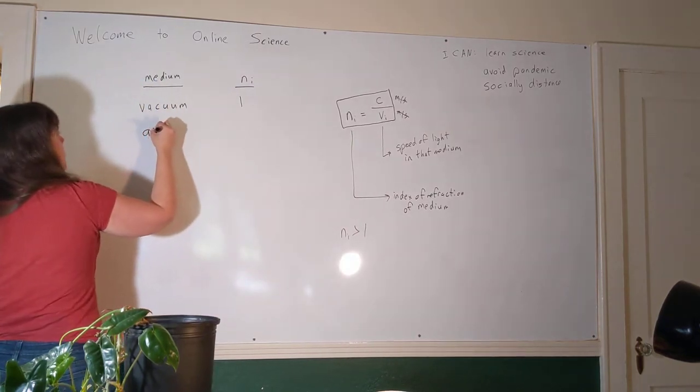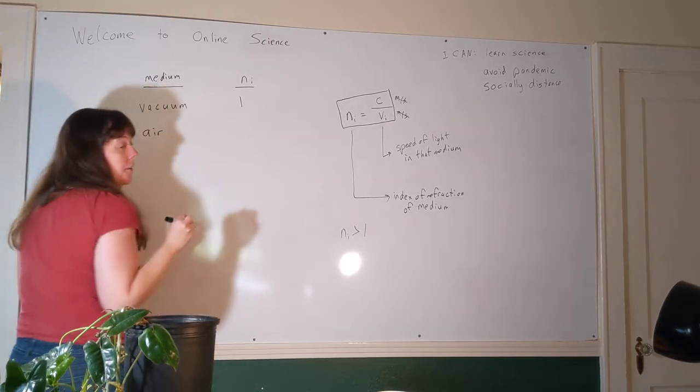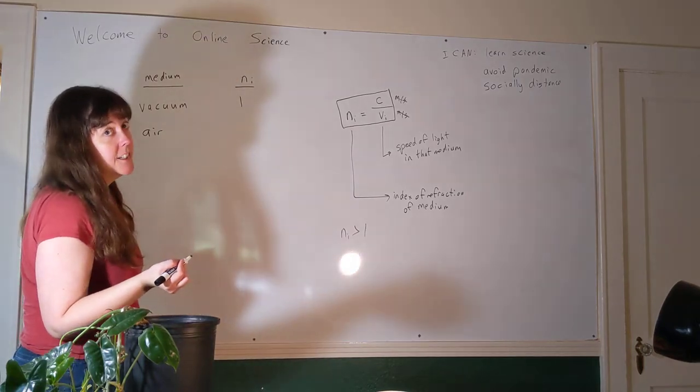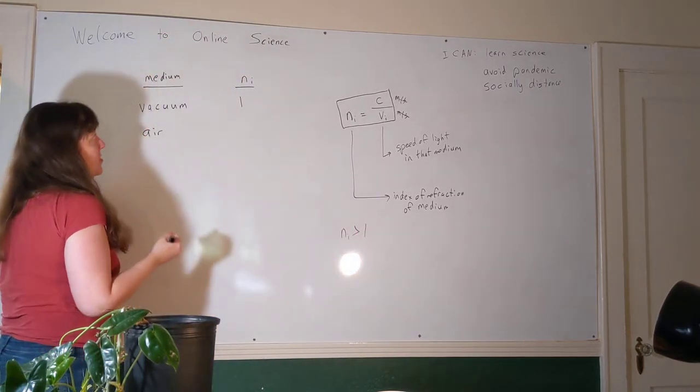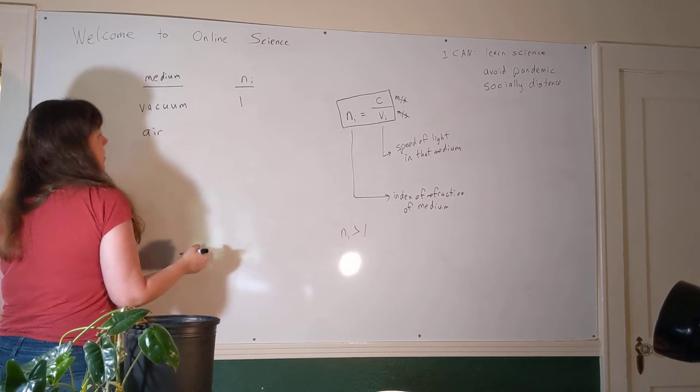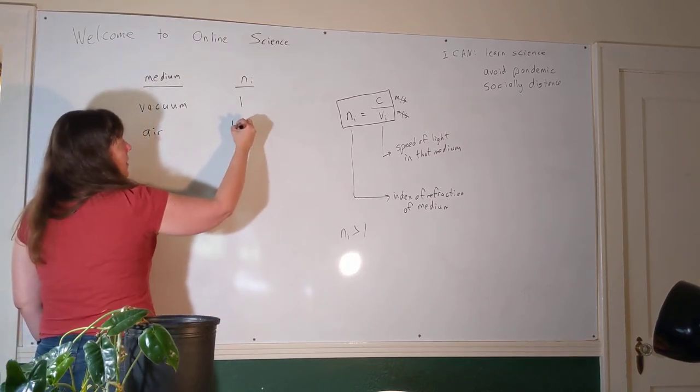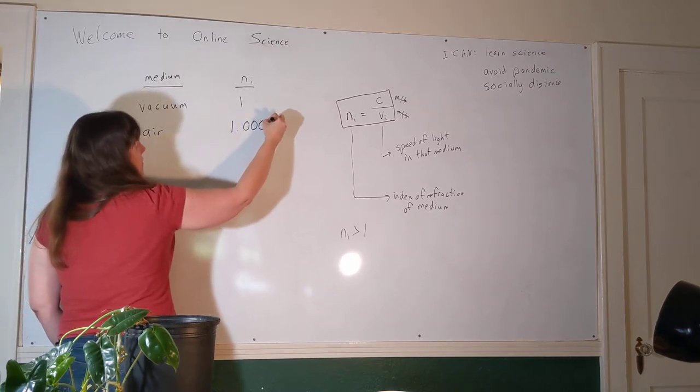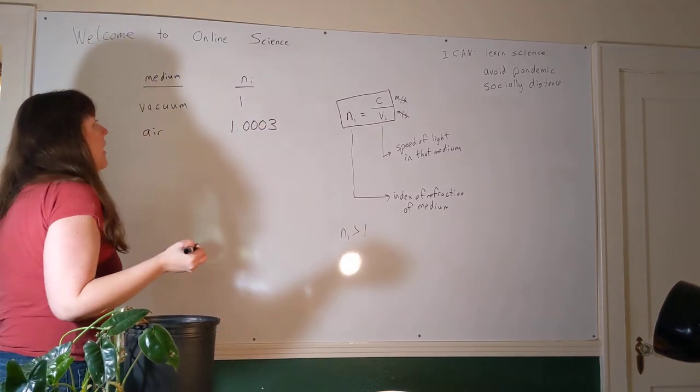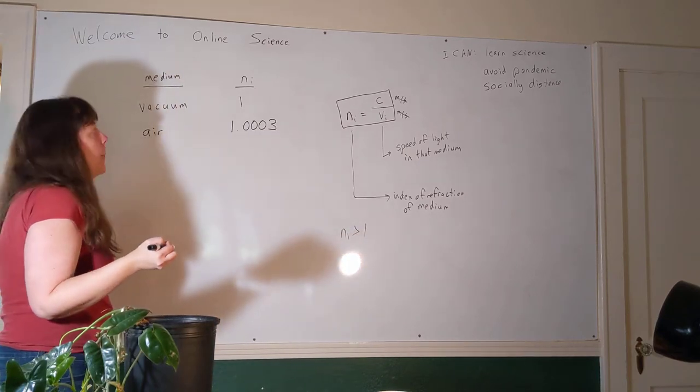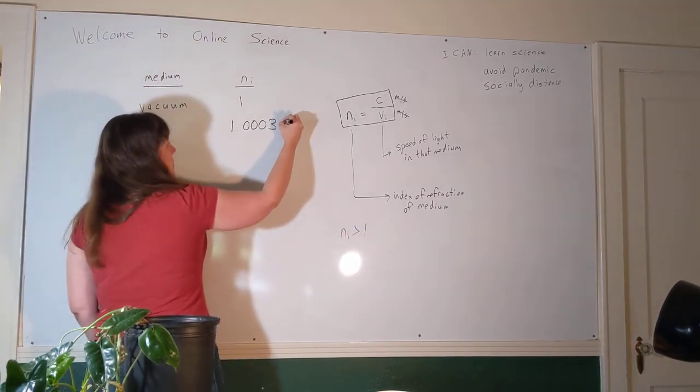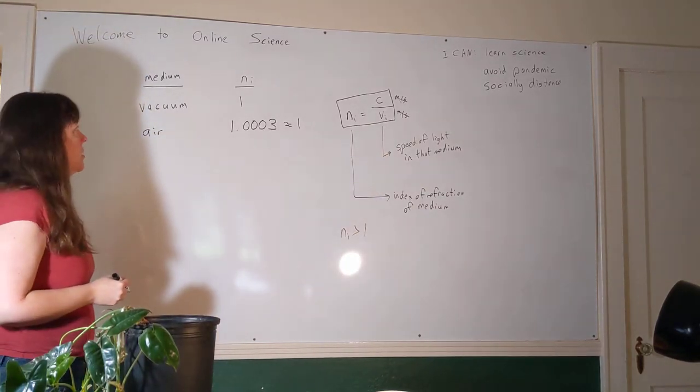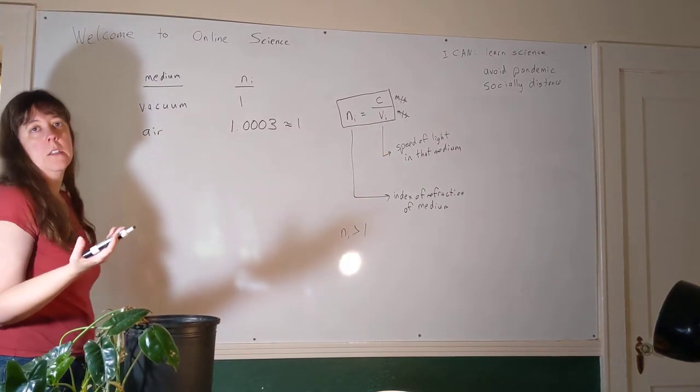Most of the problems that we have solved so far have involved light moving through air, and when you've done those calculations, you've been assuming that the speed of light in air was the same. Well, it turns out that's a really good assumption because the index of refraction of air is 1.0003. Does light slow down in air? I mean, yeah, technically, but we're going to pretend like the index of refraction of air is also equal to one. Those two indices of refraction you should know just because they're basically equal to one.